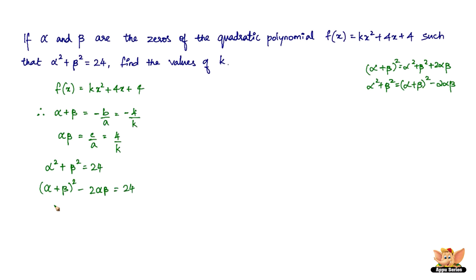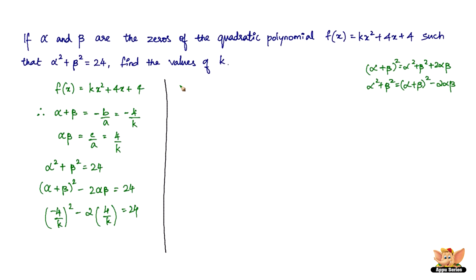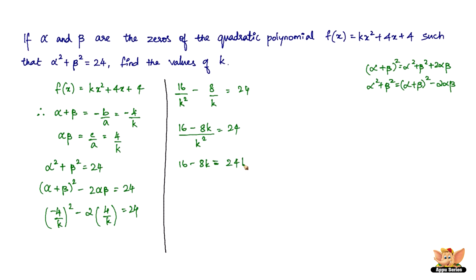We know that (alpha + beta)² = alpha² + beta² + 2·alpha·beta, so alpha² + beta² = (alpha + beta)² - 2·alpha·beta. Substituting: (-4/k)² - 2·(4/k) = 24. Now (-4)² = 16, so we get 16/k² - 8/k = 24.